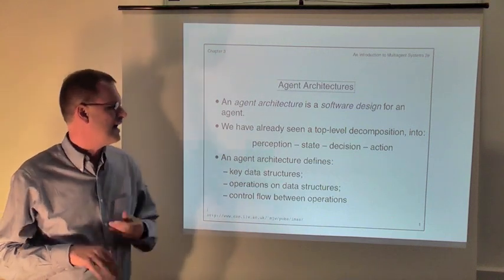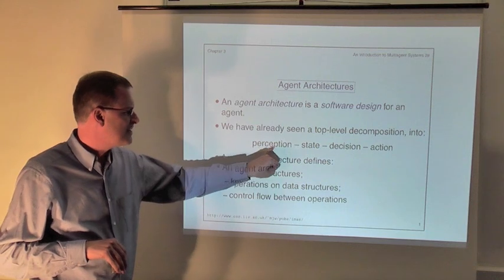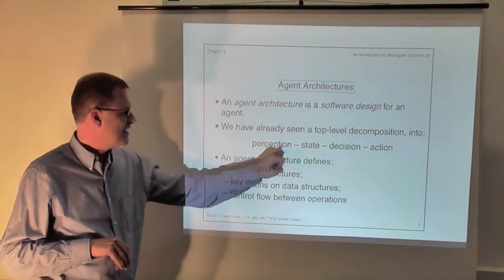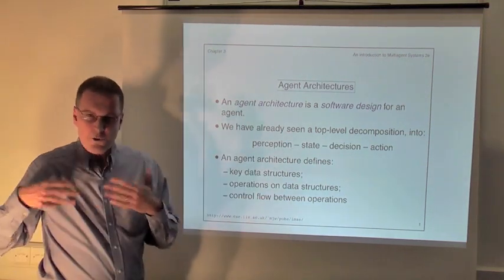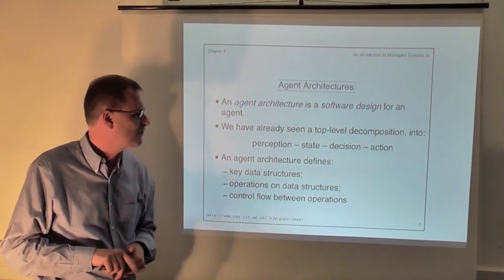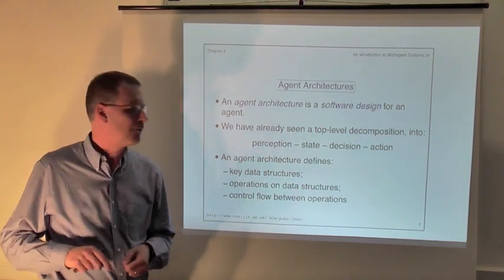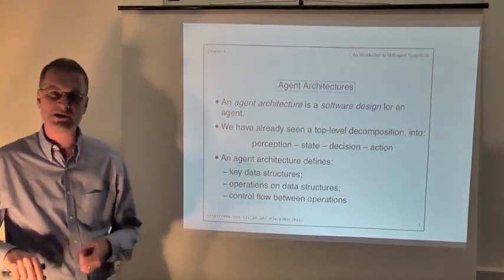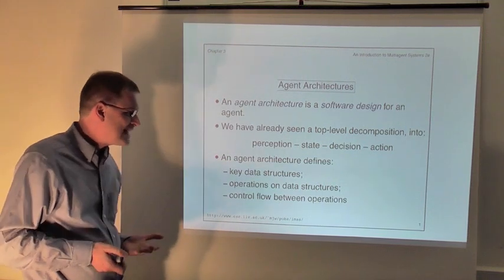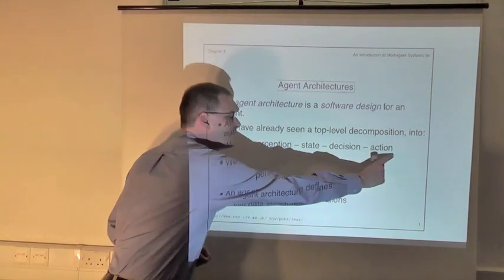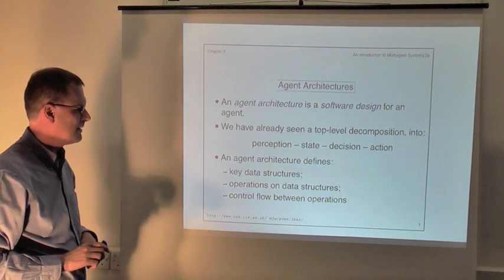We've already seen a kind of high-level decomposition — a high-level agent architecture where we decompose an agent into perception, state, decision, and action subsystems. The perception subsystem is responsible for getting information from the environment. The state subsystem is responsible for recording that information and deciding what to remember about the environment. The decision-making subsystem is responsible for actually making the decision about what action to perform. And then finally, the action subsystem performs the action at the interface between the agent and the environment. What we're going to do now is dig a little bit deeper and focus on the state, decision, and to a certain extent, the action subsystems.